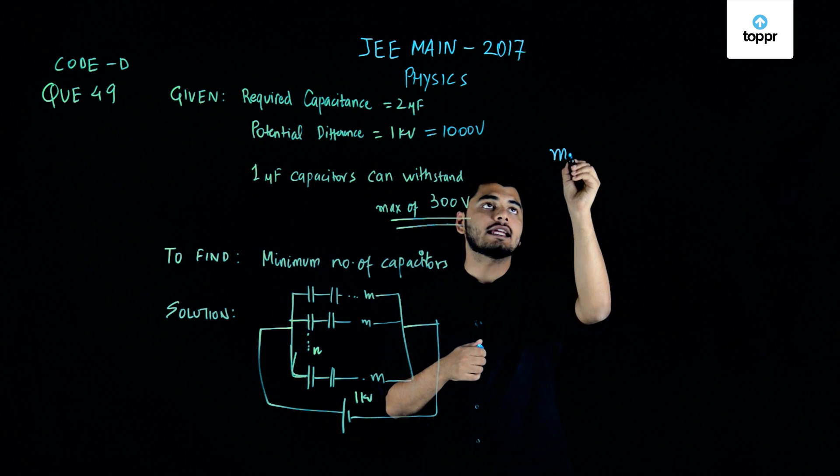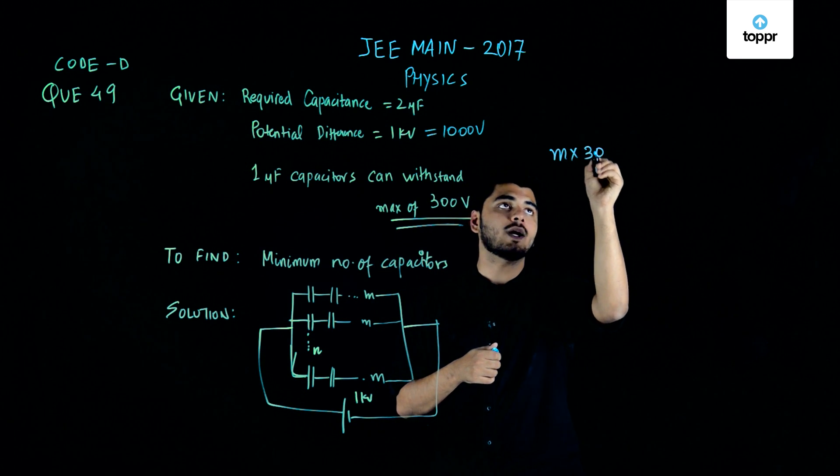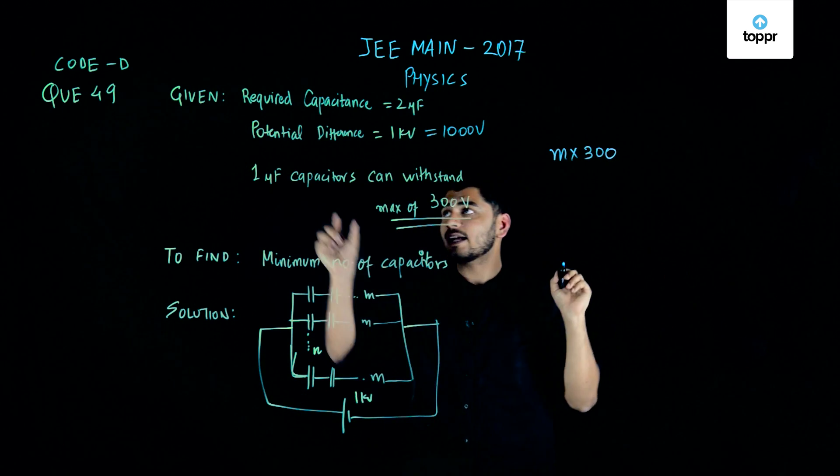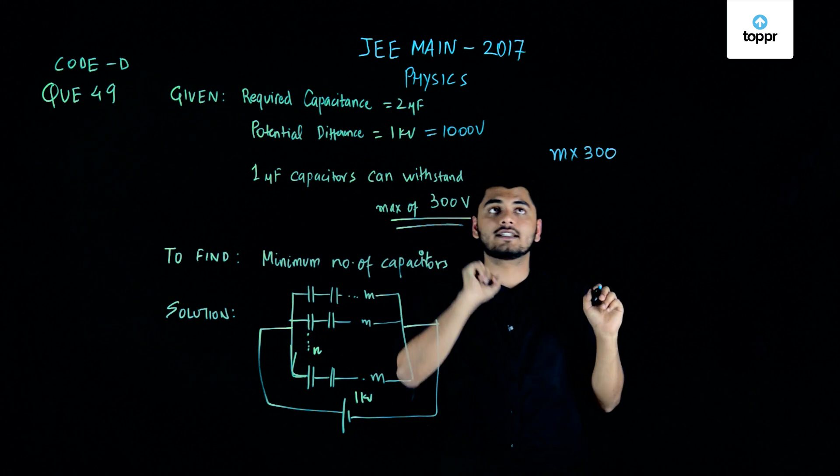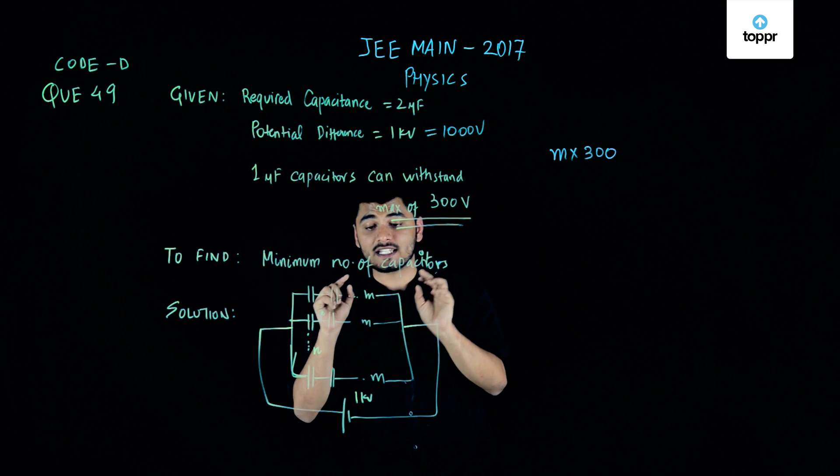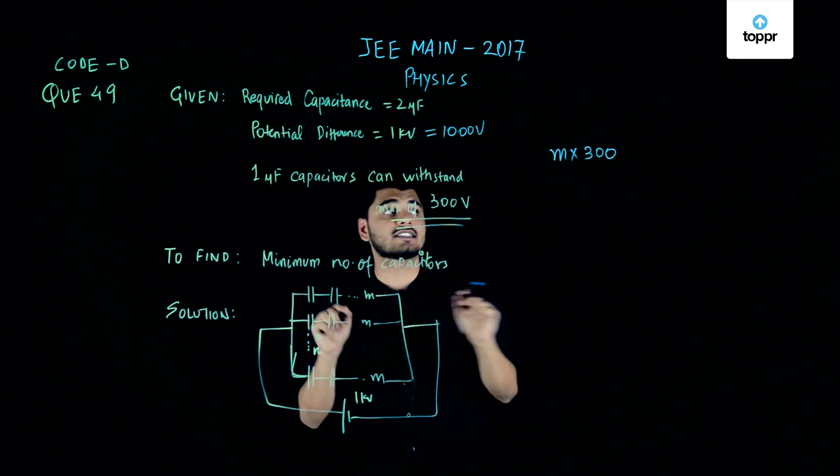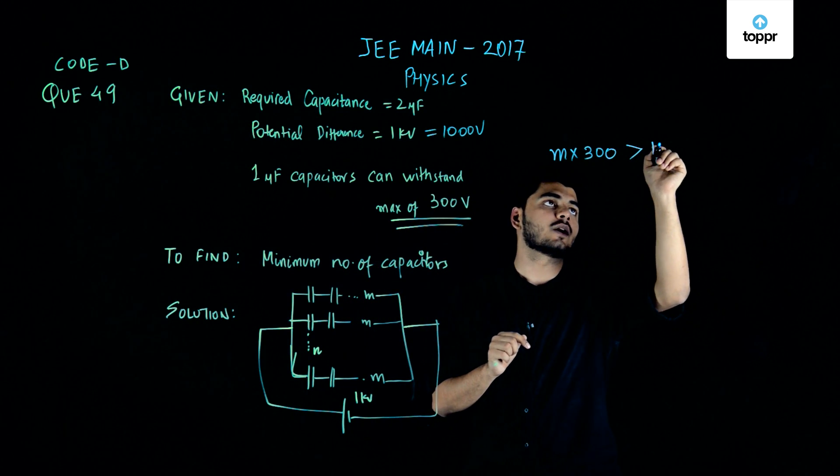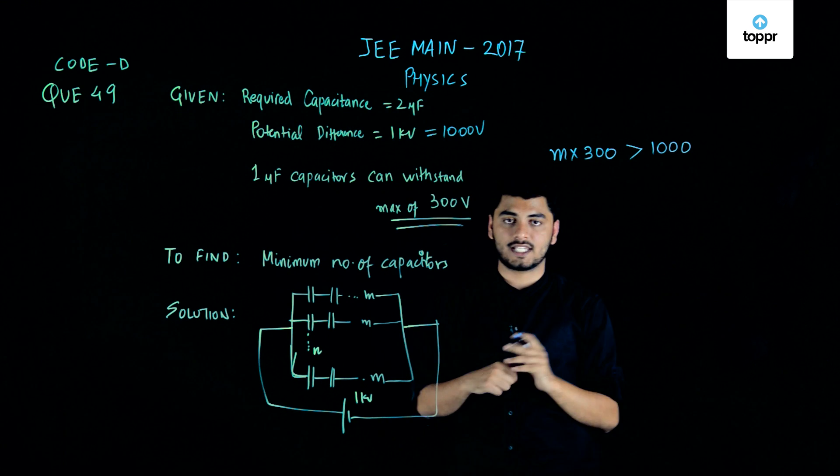So my m times 300, that is one of my capacitors can withstand 300. So using m such capacitors, the net potential difference this branch can withstand should be greater than 1000. This is the first condition that I have.